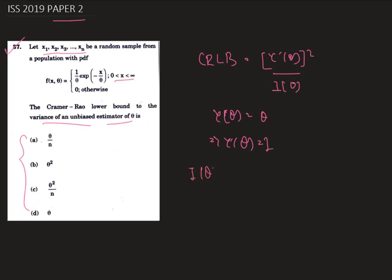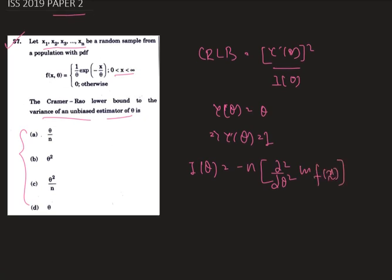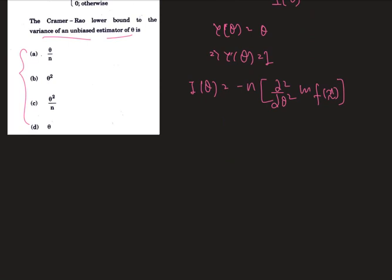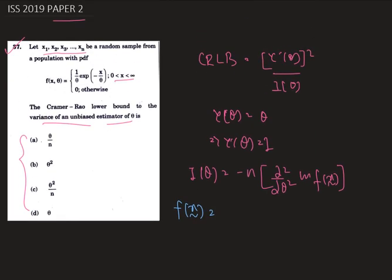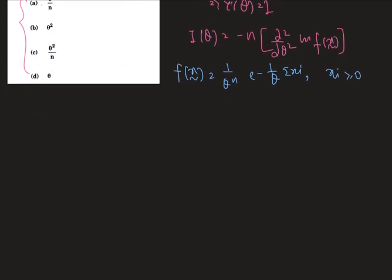And i(theta) is minus n times del squared del theta square ln f(x) curve. First of all, we need to find the joint density of these random variables, that is f(x) curve, which is 1 by theta to the power n times e to the power minus 1 by theta sum over xi, where xi's are all positive as it is an exponential distribution.